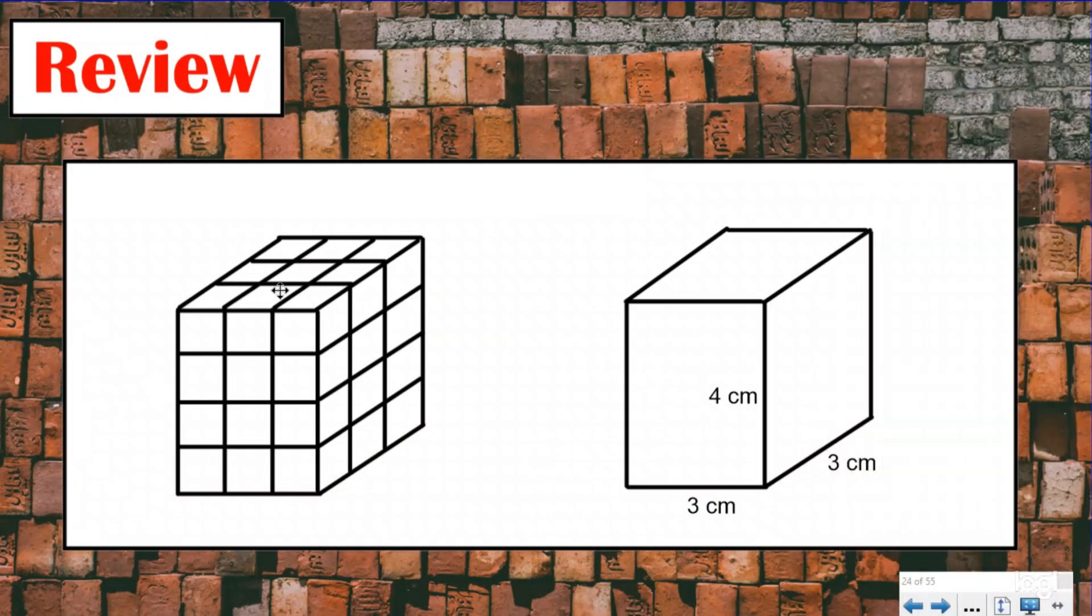So here's what I mean by having a rectangular prism made out of unit cubes. It's kind of like having them built out of those Legos or the Minecraft blocks. And you can see visually the unit cubes that are making up the rectangular prism.